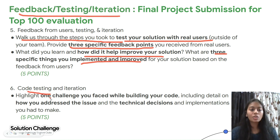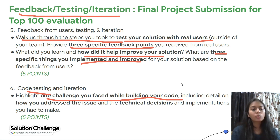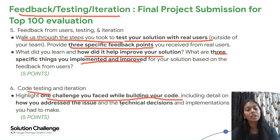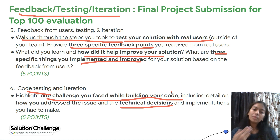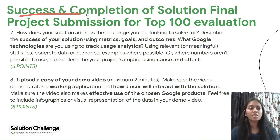For code testing and iteration, highlight one challenge you faced while building your code, including details of how you addressed that challenge, what technical decisions you took, and what implementations you had to make.